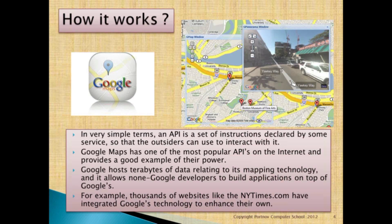How does it work? In very simple terms, an API is a set of instructions declared by some service so that outsiders can use them to interact with it. Google Maps has one of the most popular APIs on the internet and provides a good example of their power.